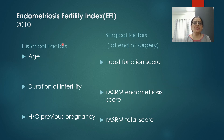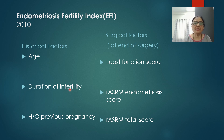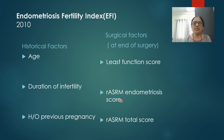The third classification system is the Endometriosis Fertility Index (EFI), introduced in 2010. It has two components: historical factors and surgical factors. Historical factors include age, duration of infertility, and history of previous pregnancy. Surgical factors to be noted at the end of surgery include the Least Function Score, the ASRM endometriosis score, and the total ASRM score.